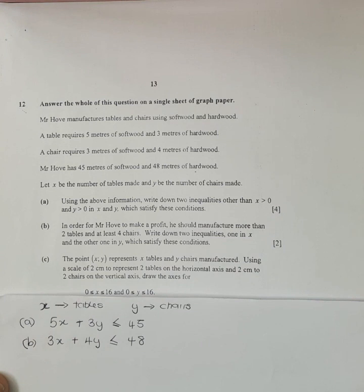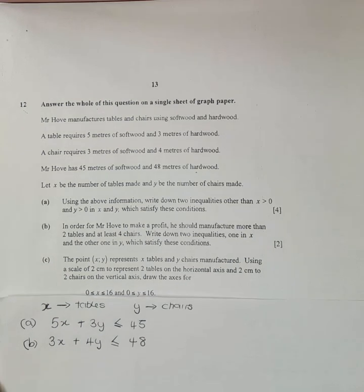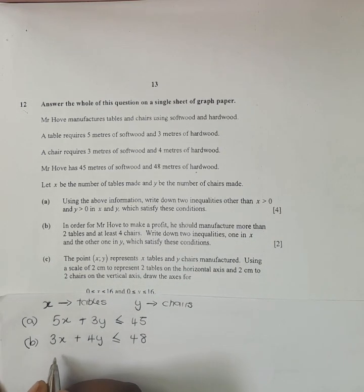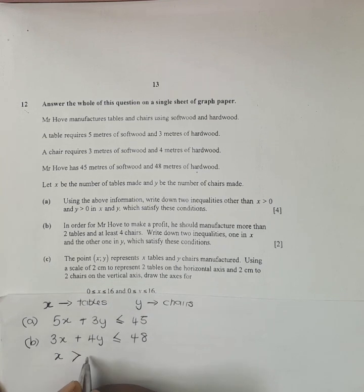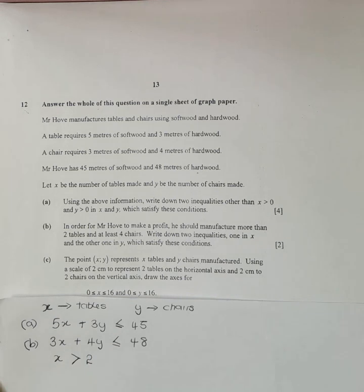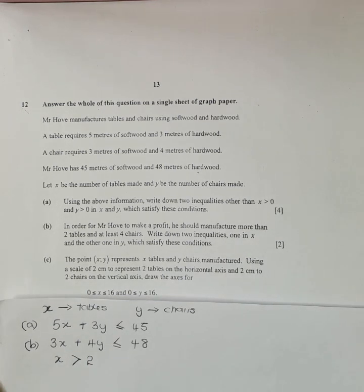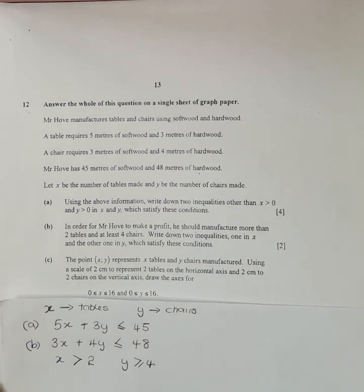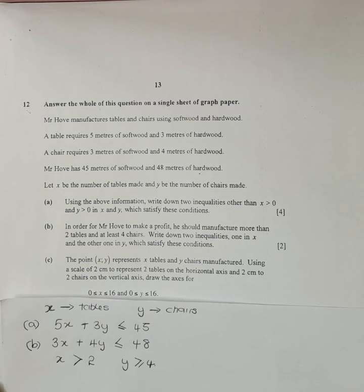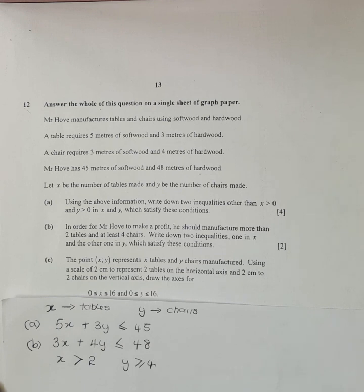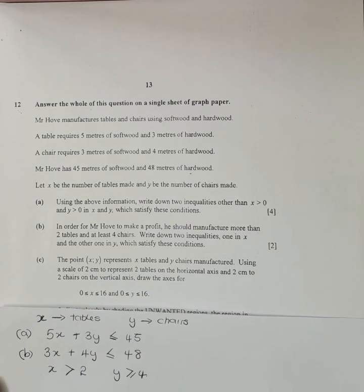In part B, for Mr. Wove to make a profit, he should manufacture more than two tables, so x is strictly greater than 2. And at least four chairs, meaning y is greater than or equal to 4. You should understand at least means greater than or equal to, and at most means less than or equal to. By doing this, we now have 6 of the 12 marks.